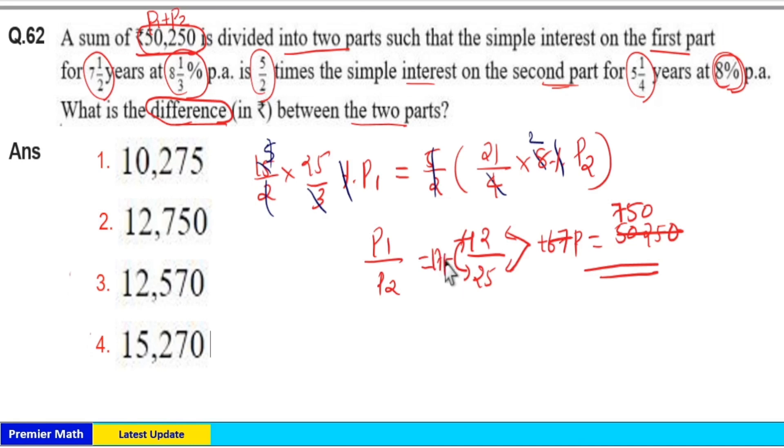17 parts is the difference. The answer equals 17 parts, which is 17 into 750. Zero at the end, 7 into 5 is 35, so 12,750. If you check the options, option 2 is your answer.